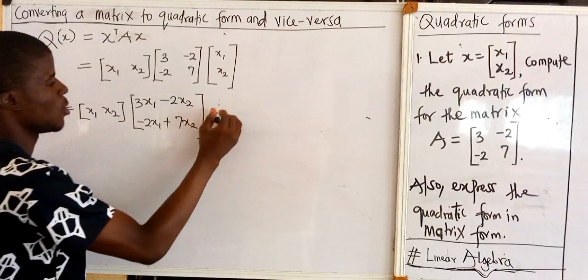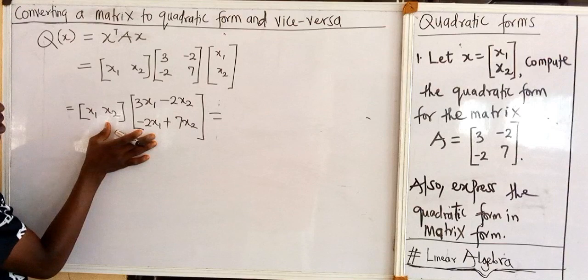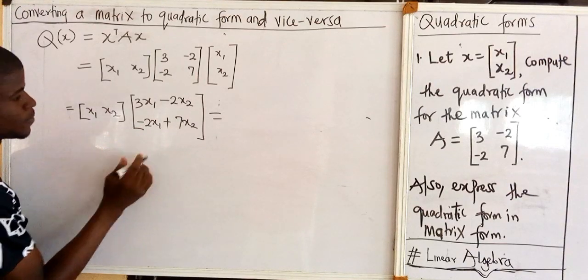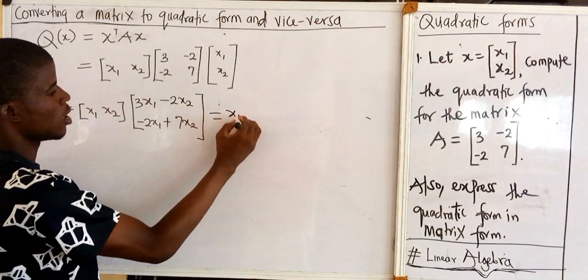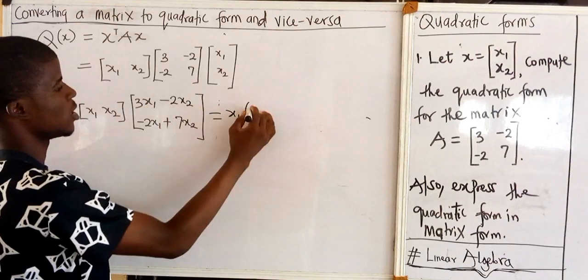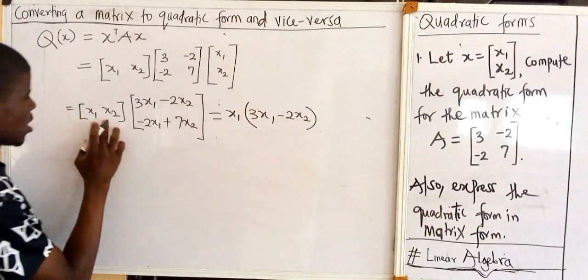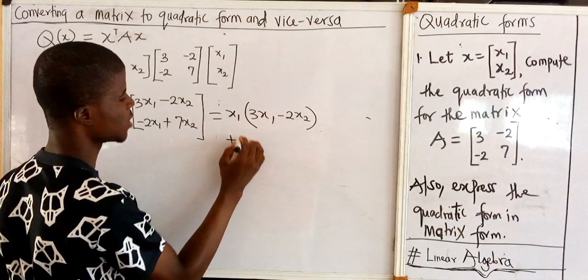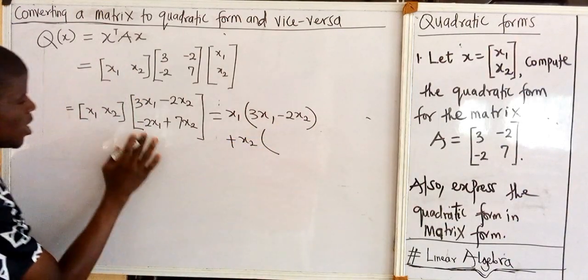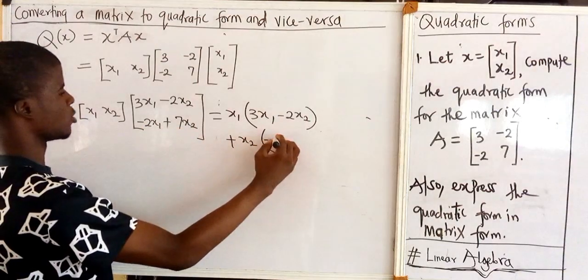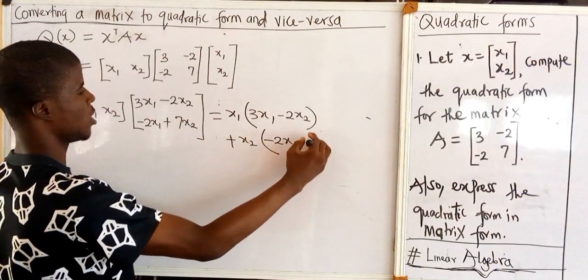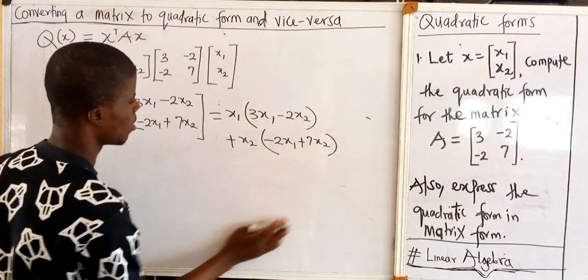So now we are going to multiply these two matrices lastly in this way. x1 we multiply the element in this first row that is 3x1 minus 2x2, and then x2, that is plus x2 we multiply the element in this last row minus 2x1 plus 7x2.